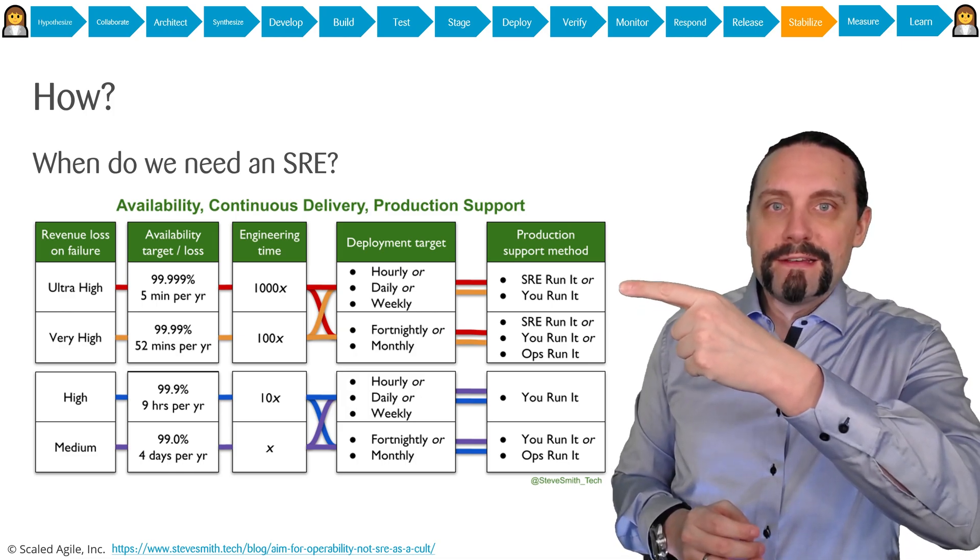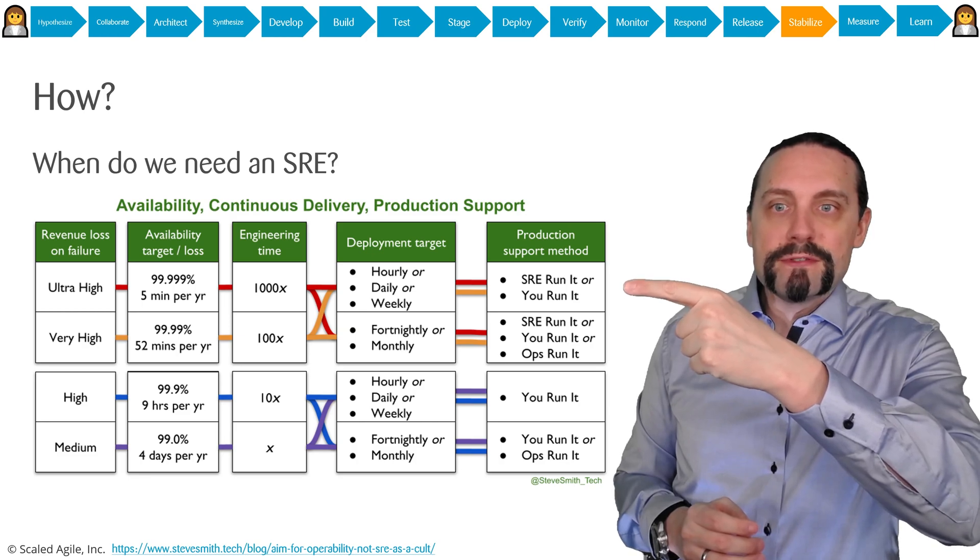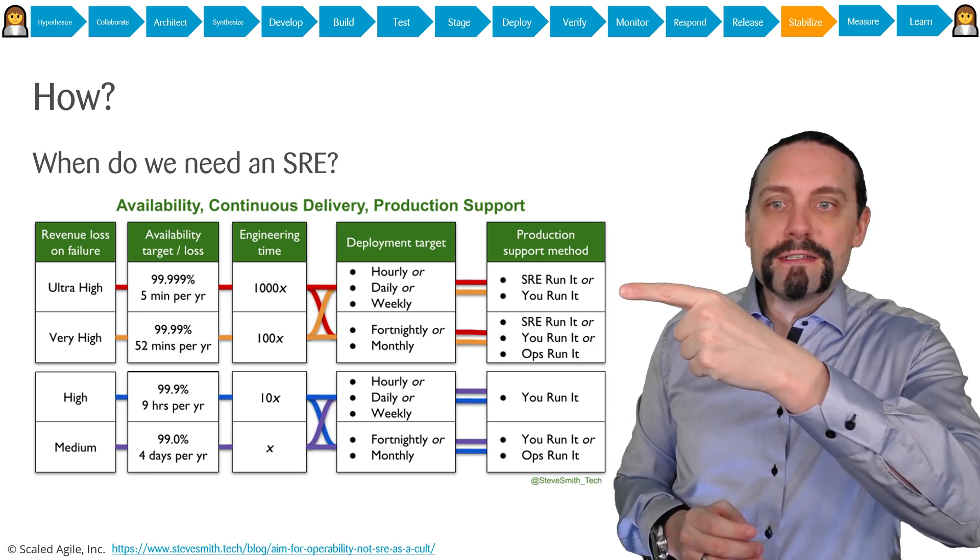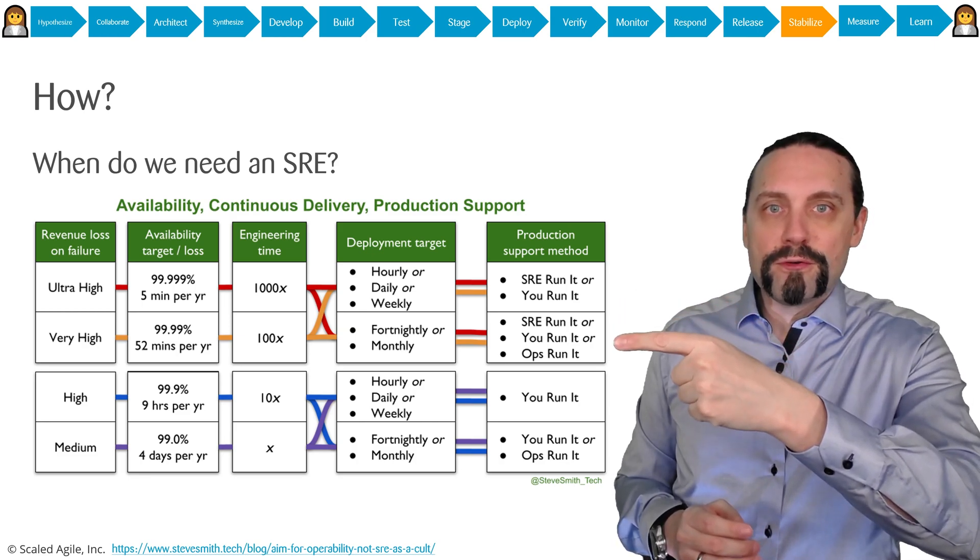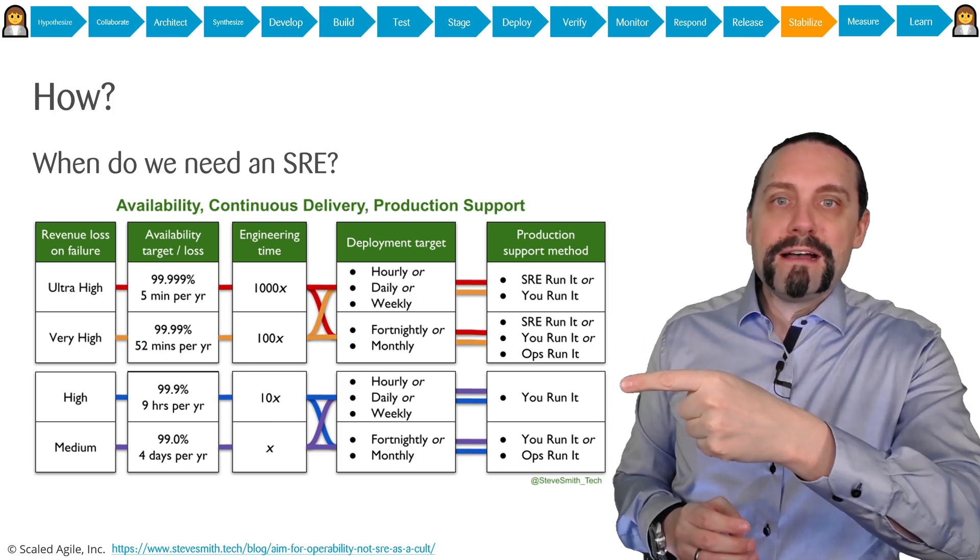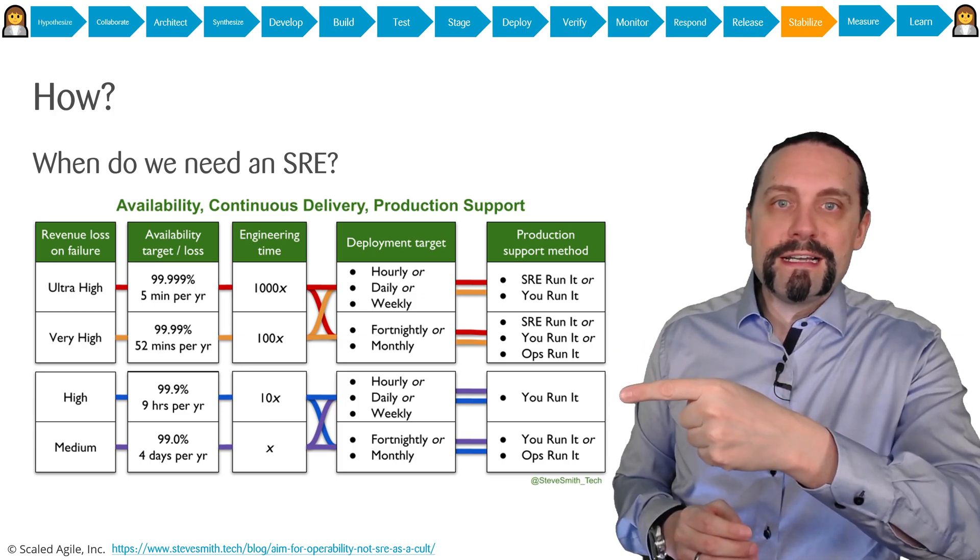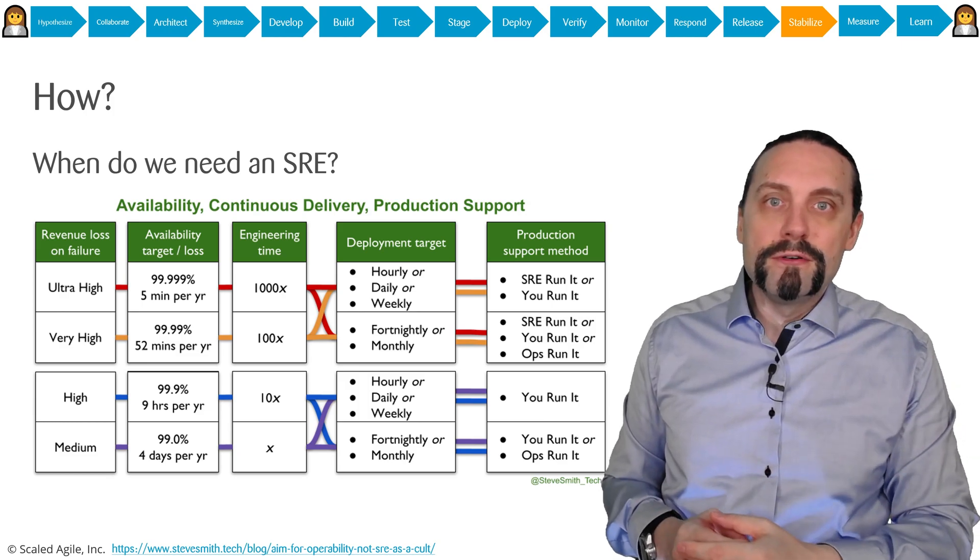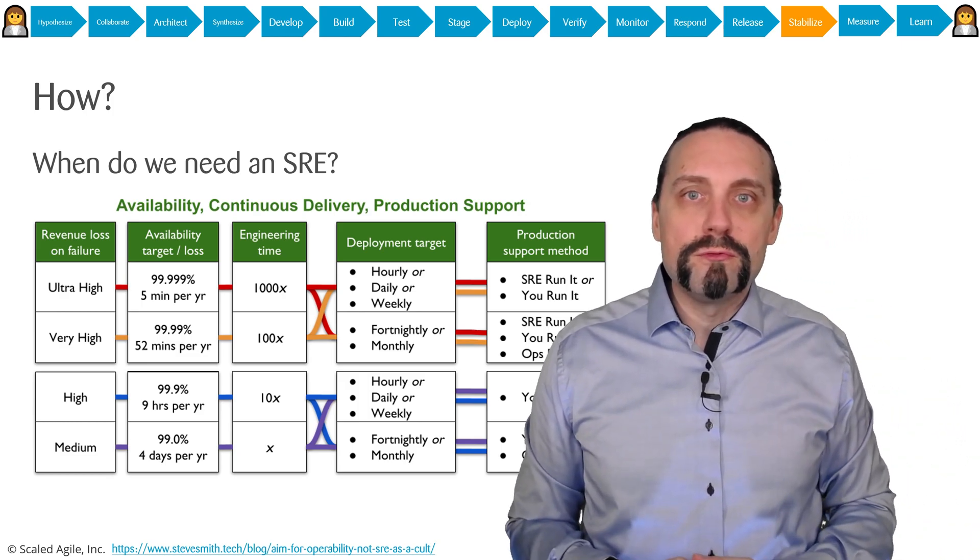Which means that an SRE is best used when you have availability targets of five nines and four nines. When you have an availability target of three nines and two nines and below, you can do DevOps.